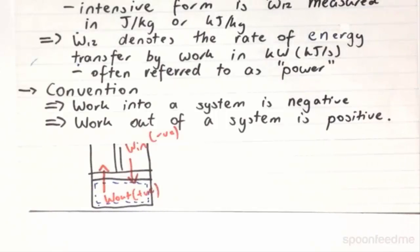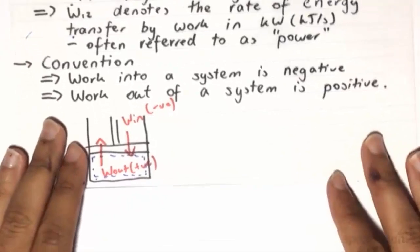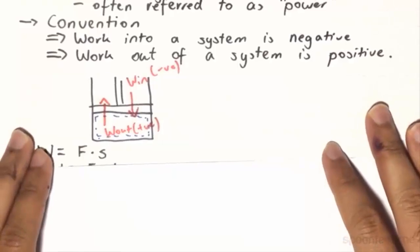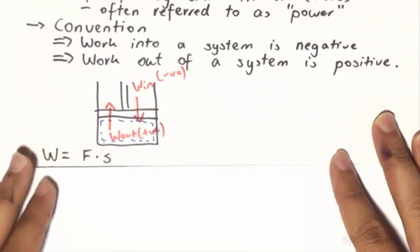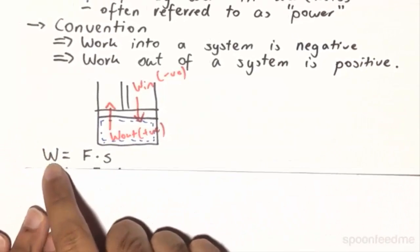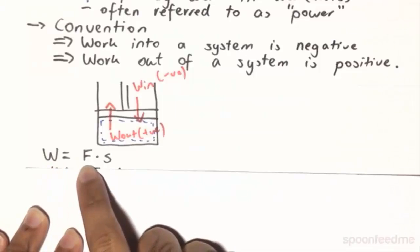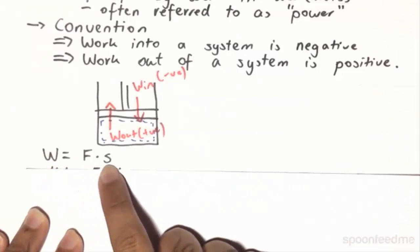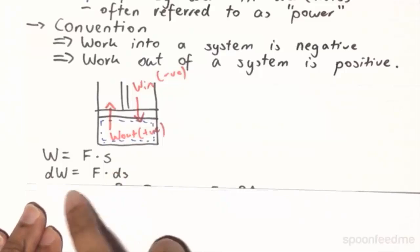Unlike our heat, work can be somewhat quantitatively analyzed if we look at our fundamental principles from physics. From fundamental physics, work is defined as the force times the displacement. So if we take it in differential form, it will be dW is equal to F times the dot product of ds.